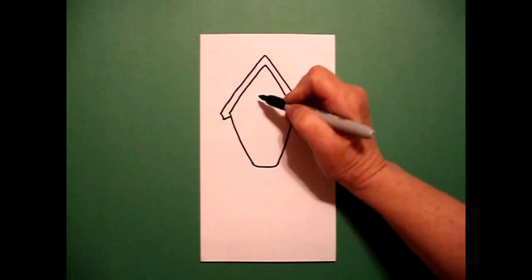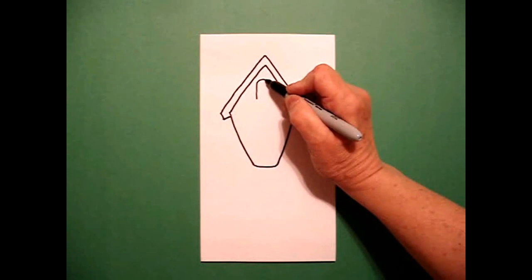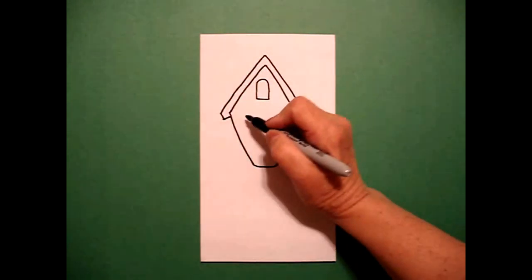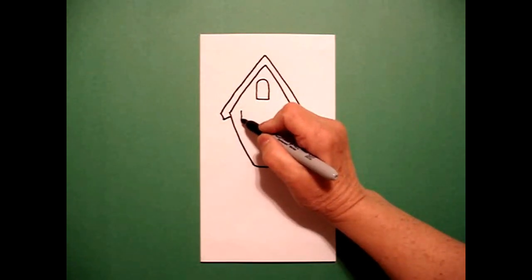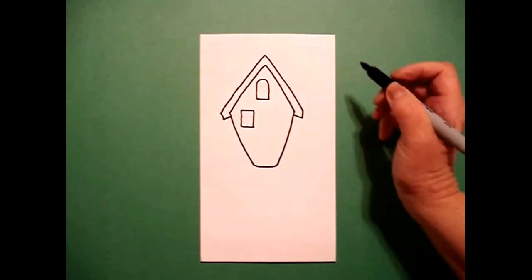Inside, at the top, I draw a straight line, curve line, straight line, connect in the center. And then I'm going to draw two boxes. One, two, three, four straight lines.